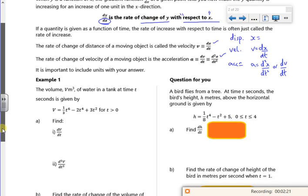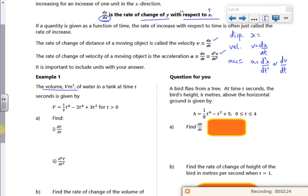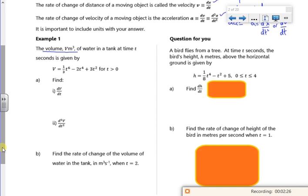So this is about the volume of water in a tank. Find dv by dt. If I differentiate ⅓t⁶, it's 6 times by ⅓, which is 2. So that's going to give me 2t⁵, then minus 2 times 4t³, so minus 8t³, and plus 6t.